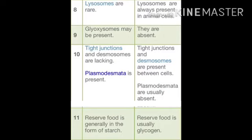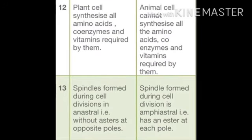Tight junctions and desmosomes are present between animal cells. Reserve food in plant cells is generally in the form of starch; in animal cells, reserve food is usually glycogen, basically stored as fat. Plant cells can synthesize all amino acids, coenzymes, and vitamins required by them, whereas animal cells cannot synthesize all the amino acids, coenzymes, and vitamins required by them.